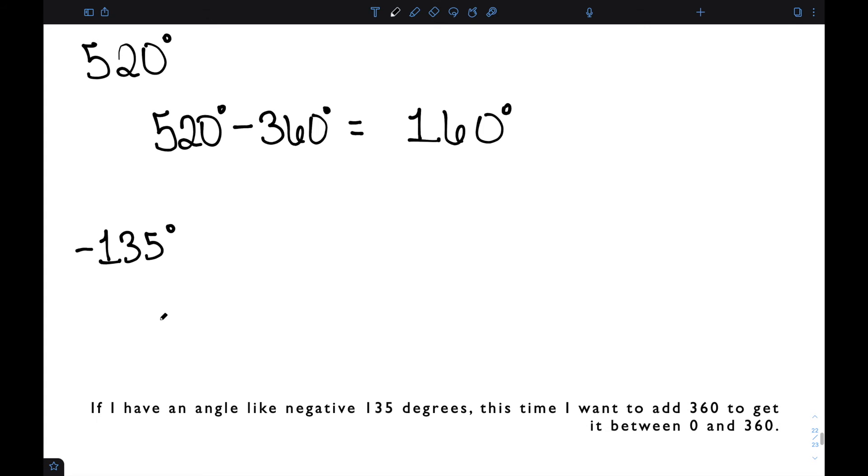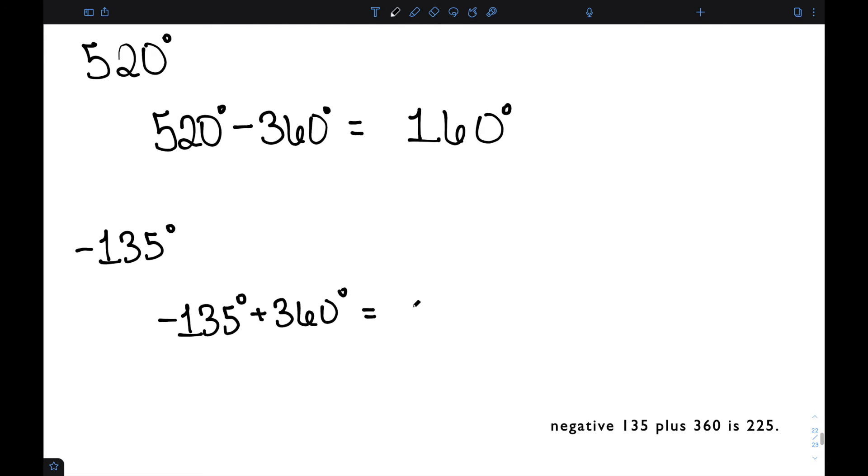If I have an angle like negative 135 degrees, this time I want to add 360 to get it between 0 and 360. Negative 135 plus 360 is 225. So negative 135 and 225 degrees are coterminal angles.